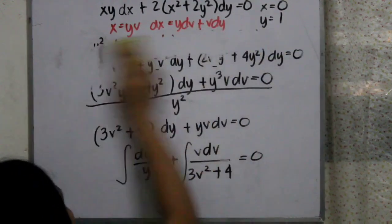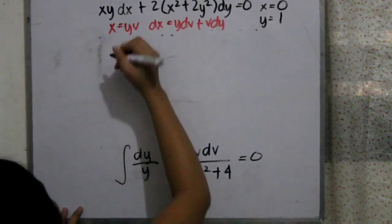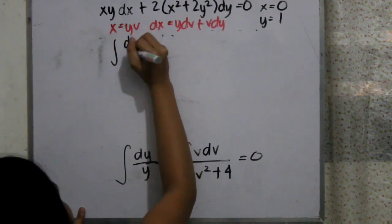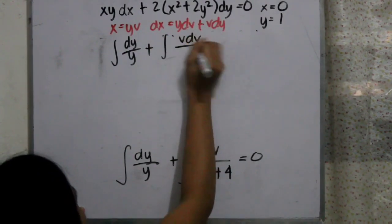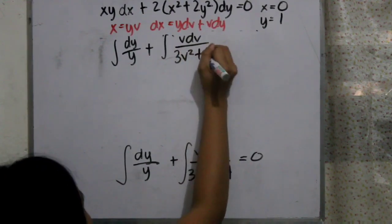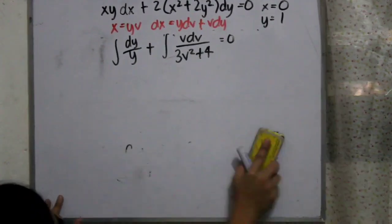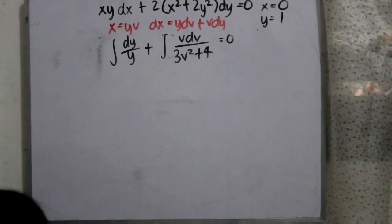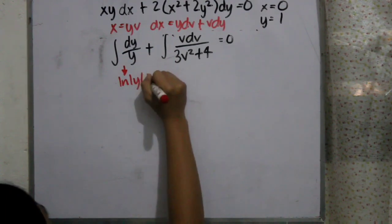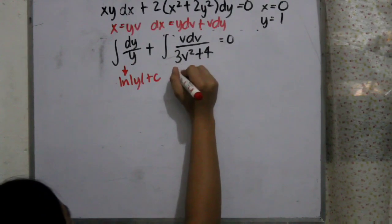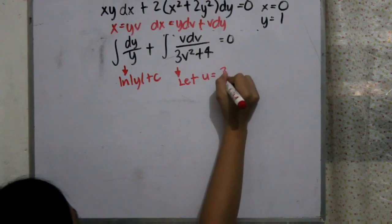The next step is to integrate each part. We know that the integral of dy over y is simply ln y plus c. So we have to focus more on the second integral, which is the integral of v·dv all over 3v² plus 4. The integral of dy over y is simply ln y plus c.